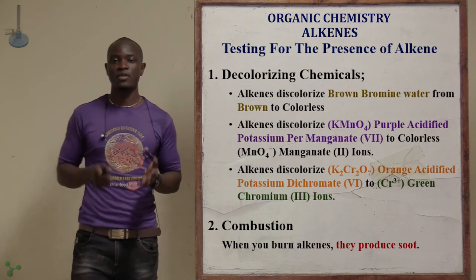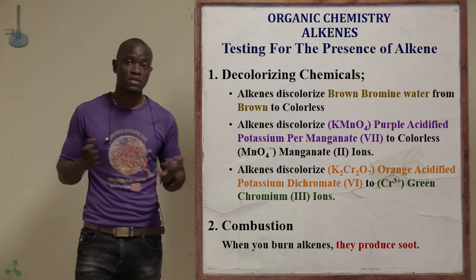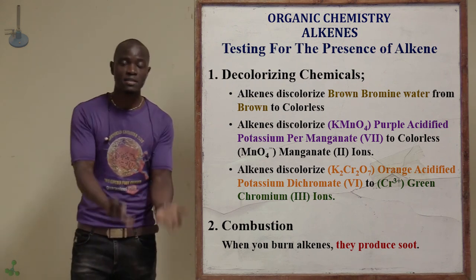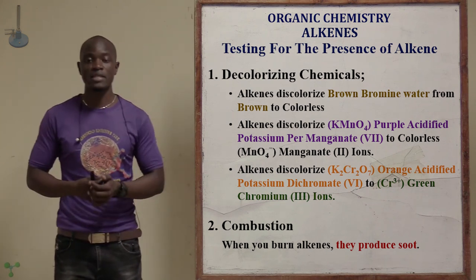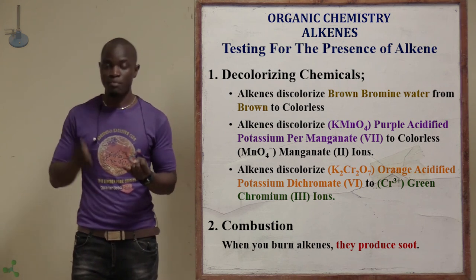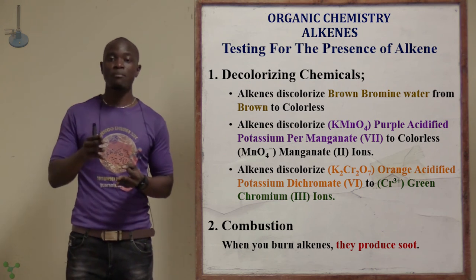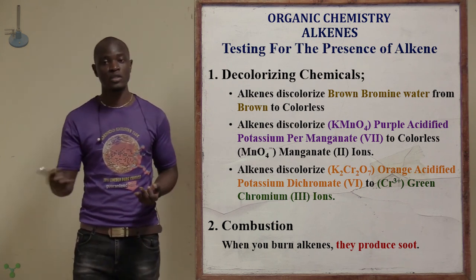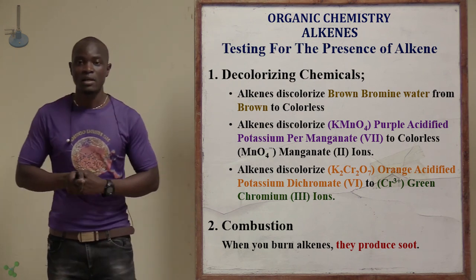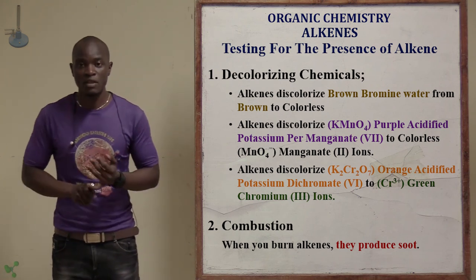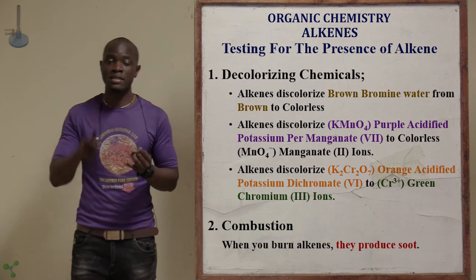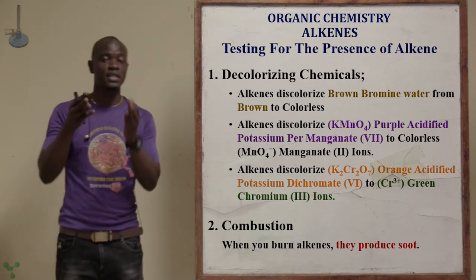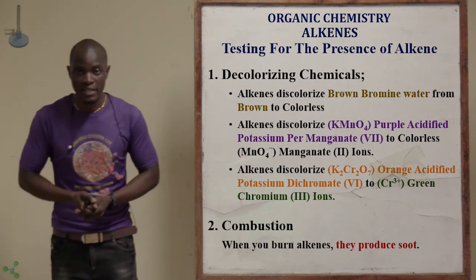How can we test for the presence of alkenes? There are two tests. First, you bubble the gas or liquid in bromine water, potassium permanganate, or potassium dichromate — if that sample is able to discolorize them, it is an alkene. Second, if you burn it and it produces soot, that is another test for alkenes. So the two main tests are: discolorization of bromine water, potassium permanganate, or potassium dichromate; and production of soot upon burning.